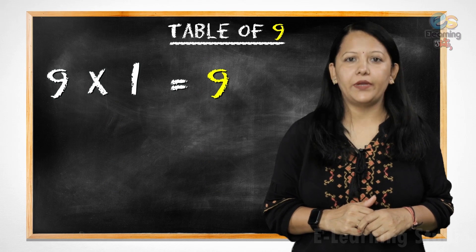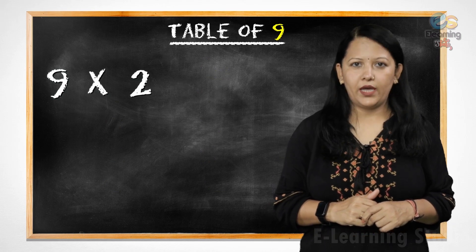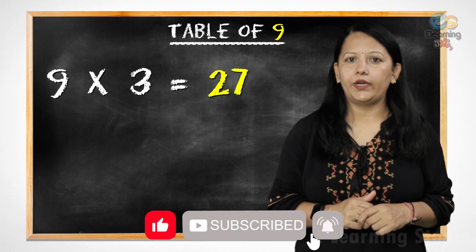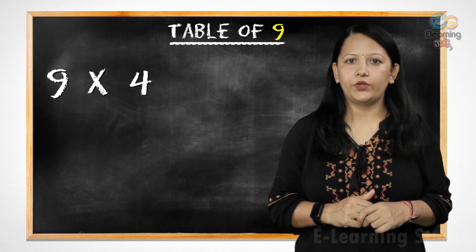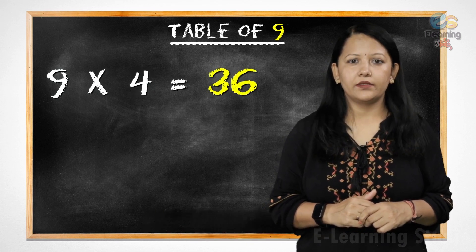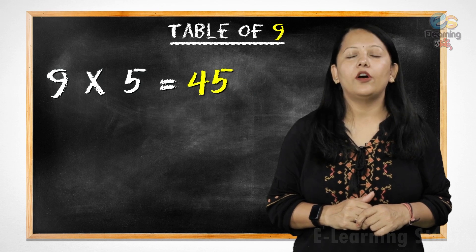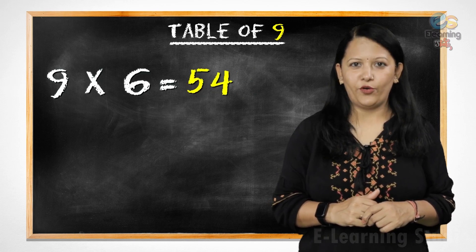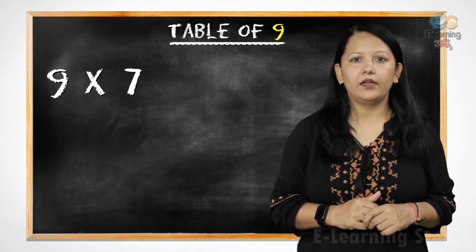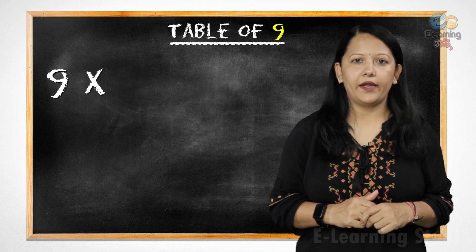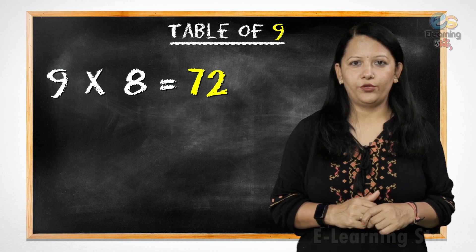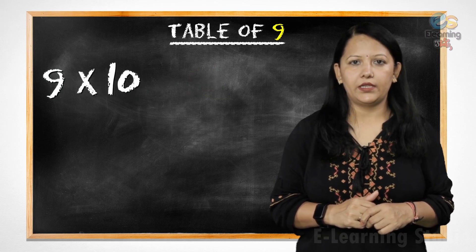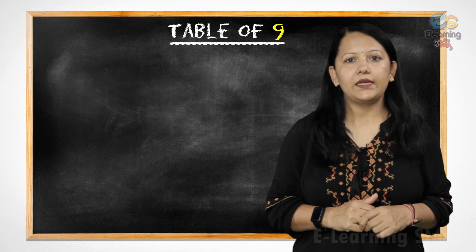9 ones are 9, 9 twos are 18, 9 threes are 27, 9 fours are 36, 9 fives are 45, 9 sixes are 54, 9 sevens are 63, 9 eights are 72, 9 nines are 81, 9 tens are 90. Let's revise it.